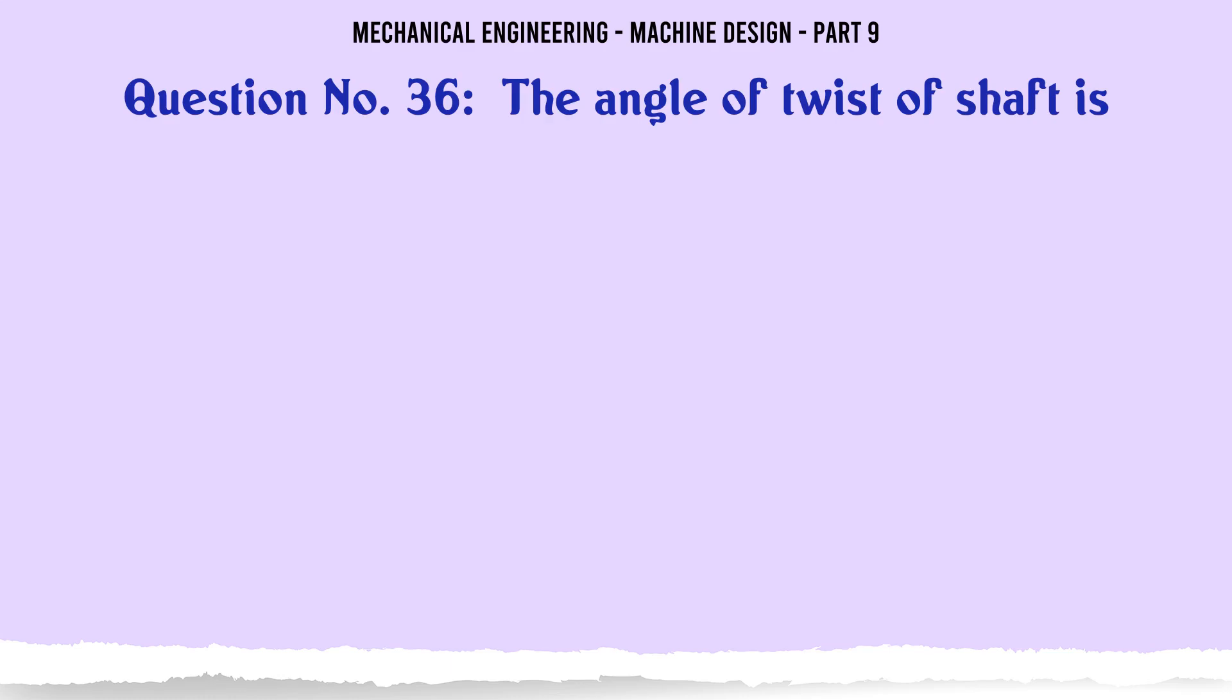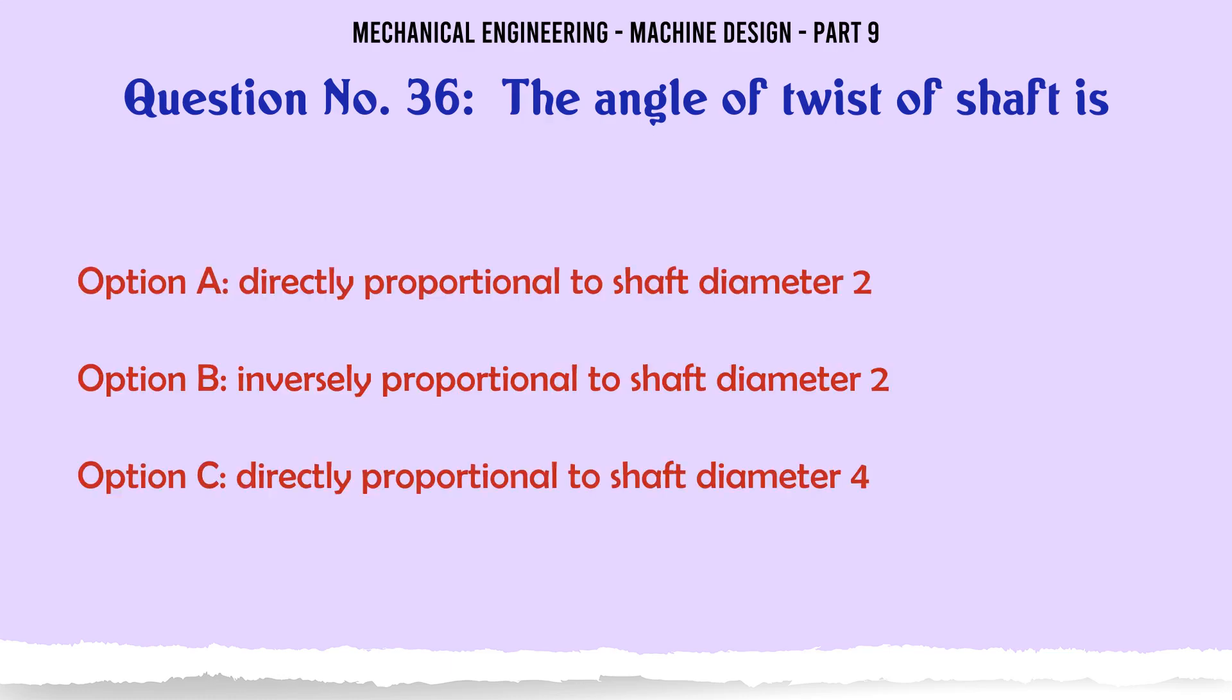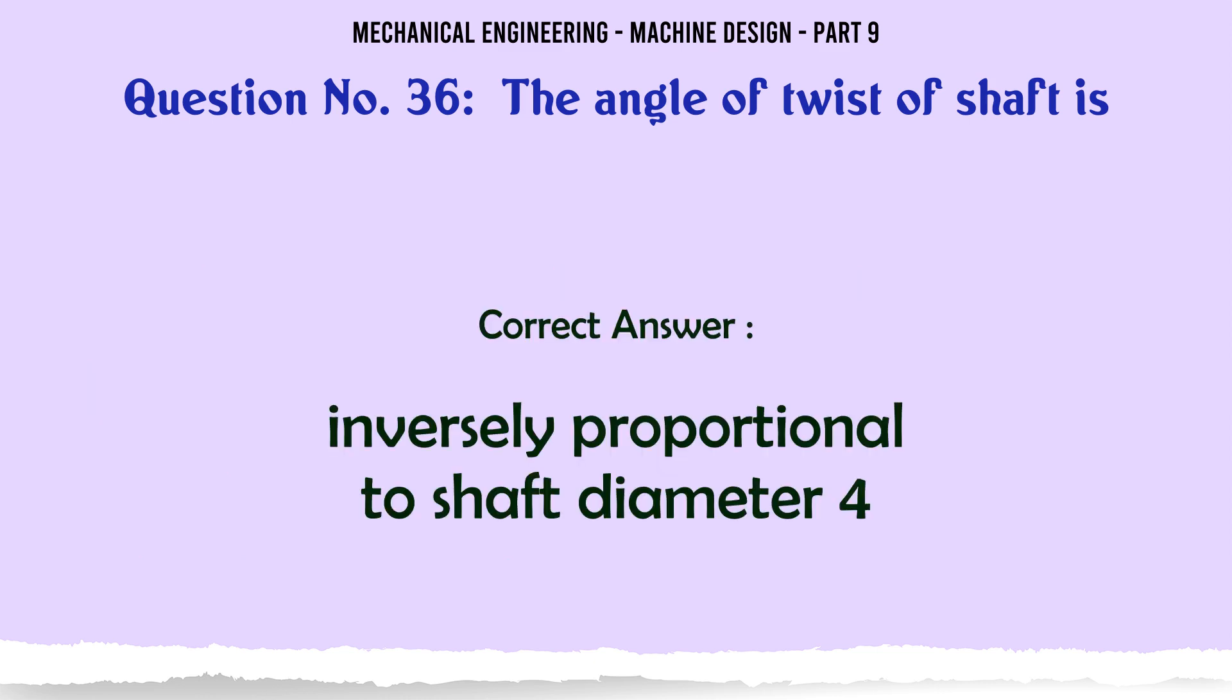The angle of twist of shaft is: A. Directly proportional to shaft diameter², B. Inversely proportional to shaft diameter², C. Directly proportional to shaft diameter⁴, D. Inversely proportional to shaft diameter⁴. The correct answer is Inversely proportional to shaft diameter⁴.